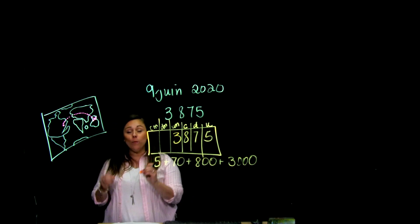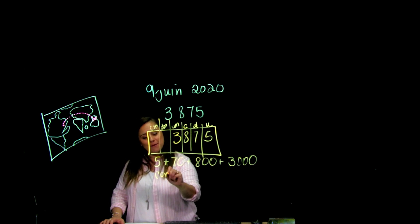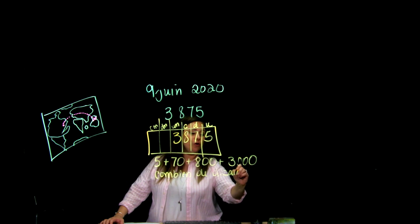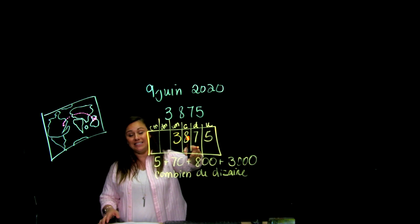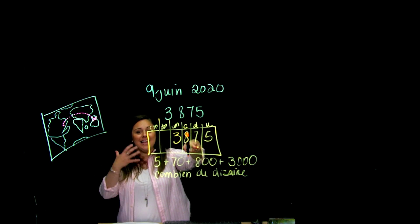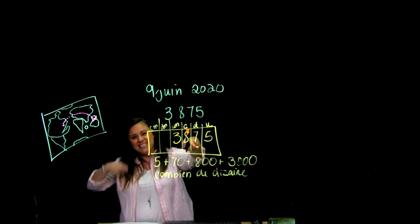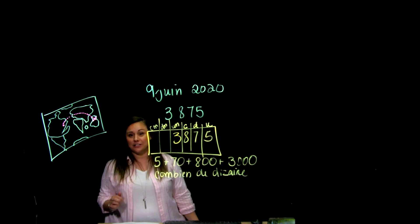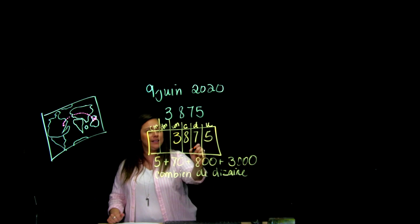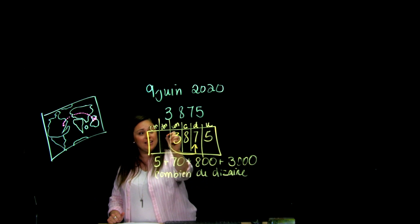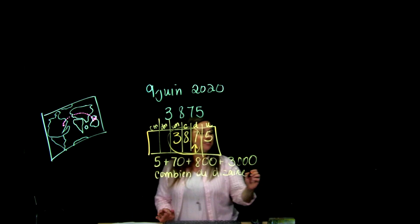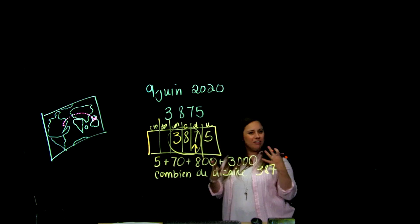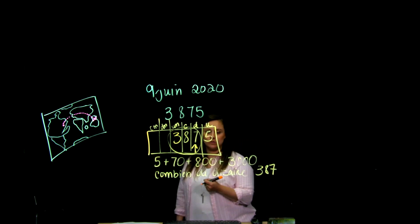Maintenant, je vais te demander combien il y a de dizaines. T'en souviens-tu comment on faisait, combien de dizaines y a-t-il dans ce nombre? Je veux pas le chiffre à la position de ces dizaines, ça, c'est facile. Je sais combien il y a de dizaines en tout. Si j'avais à mettre des 10 $, 10 $, 10 $ pour me rendre jusqu'à 3875 $, combien je devrais en mettre? Alors, j'en ai 387 dizaines.